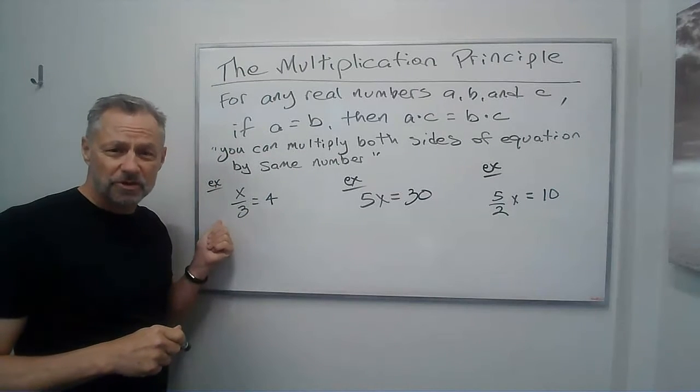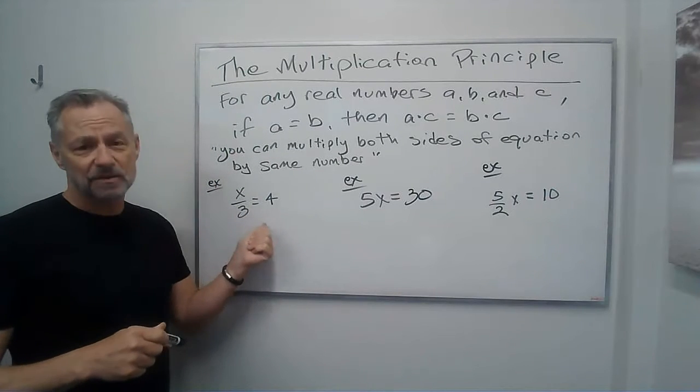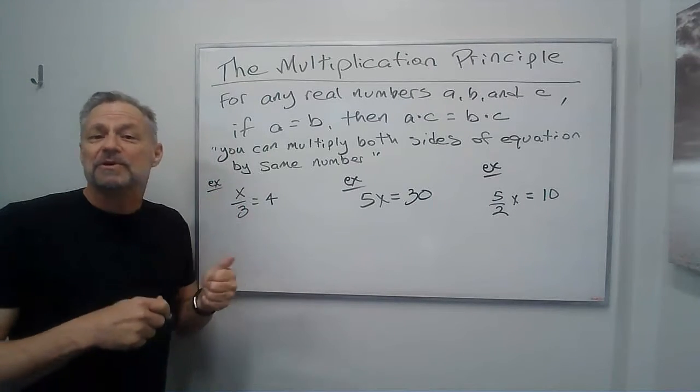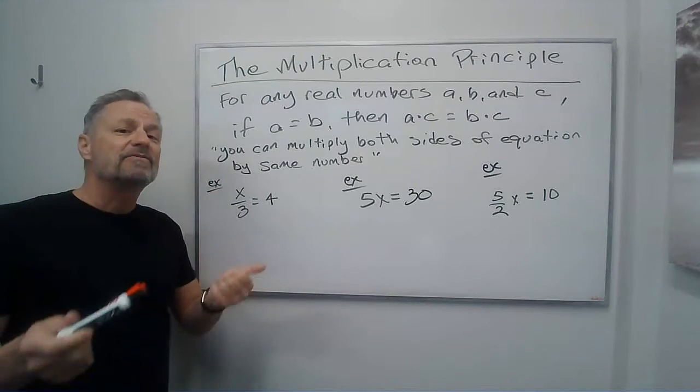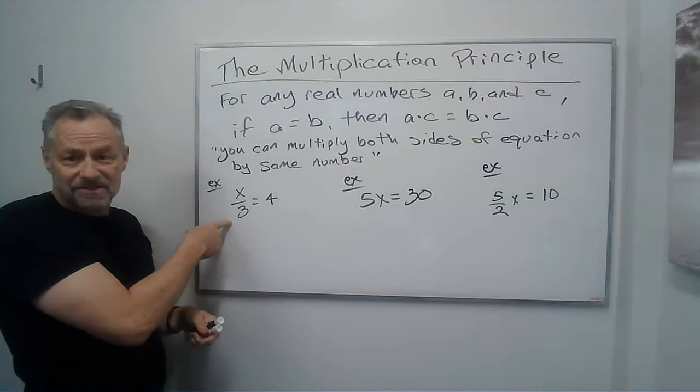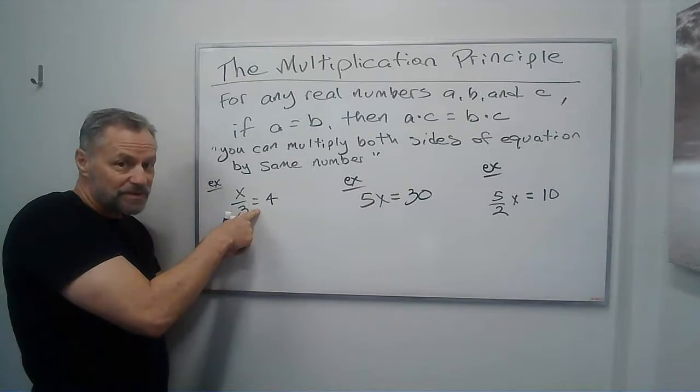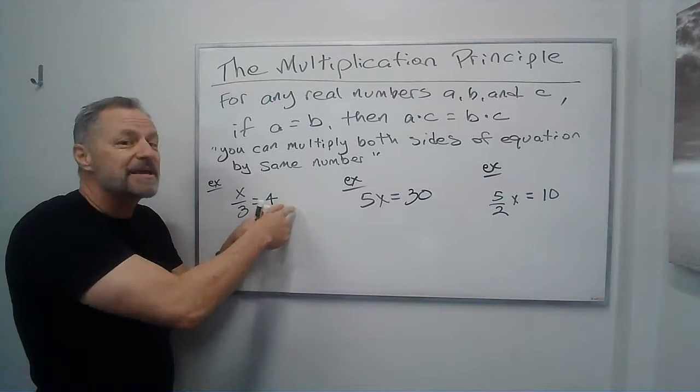Okay, so first we have x divided by 3 is equal to 4. Well, we want to do the opposite. The opposite of division by 3 is multiplication by 3. Well, if I multiply by 3, it's going to cancel out this 3, and I can do that as long as I have an equal sign, and I do the same thing to the other side of the equal sign.